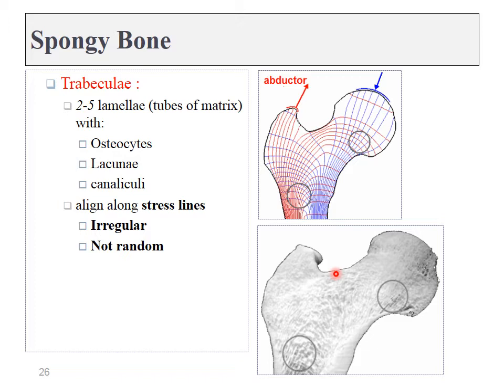Compact bone is found on the outsides of all of our bones. Spongy bone can be found on the insides. Spongy bone is made up of trabeculae — these little spicules of bone tissue. This bone tissue is about two to five layers thick, but these layers are not concentric. Spongy bone looks irregular at first glance, but these trabeculae actually do align more or less along stress lines.